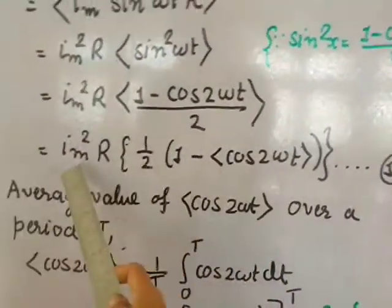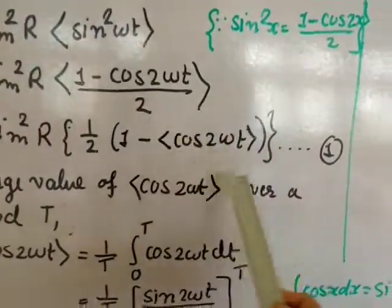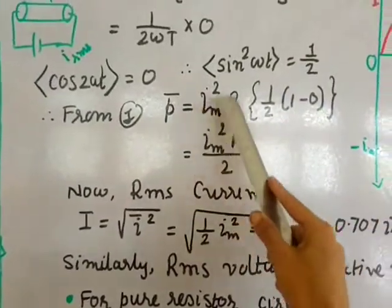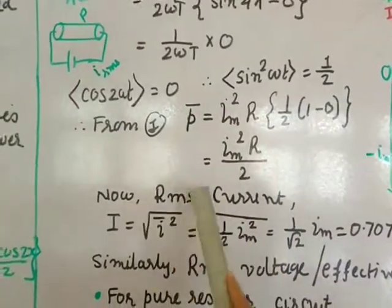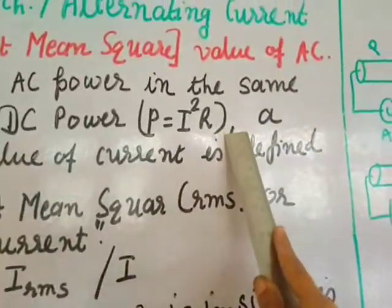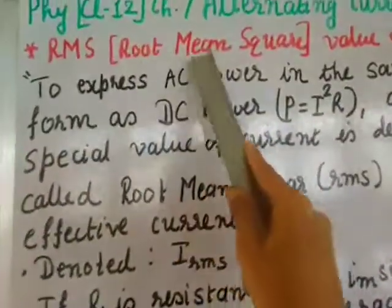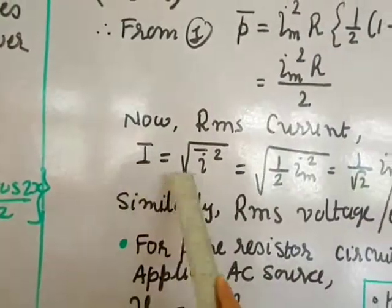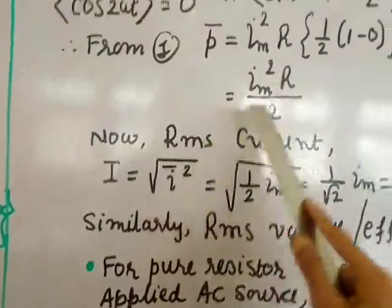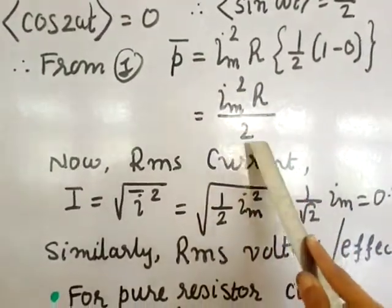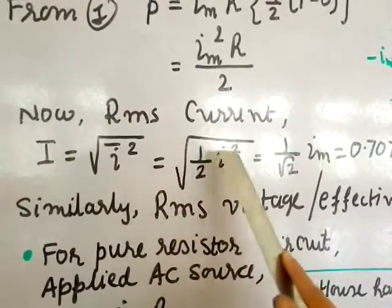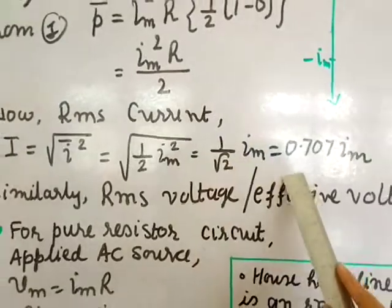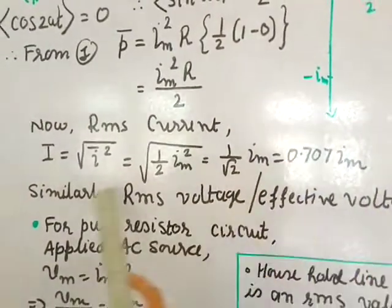Going back to equation 1: P = I_m² R · (1/2). This is the average power. For RMS current, we compare with P = I²R. So I_RMS² = I_m²/2. Since RMS means root mean square — first square, then average, then root — I_RMS = √(I_m²/2) = I_m/√2 = 0.707 · I_m. This is the value of the RMS current.